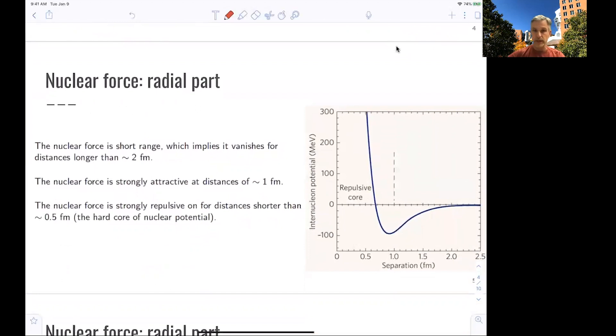So looking at the radial part of this, the nuclear force is short range, which implies it vanishes for distances longer than about 2 femtometers. So it basically vanishes in this area here. And the nuclear force is strongly repulsive for distances shorter than about 0.5 femtometers in this area.